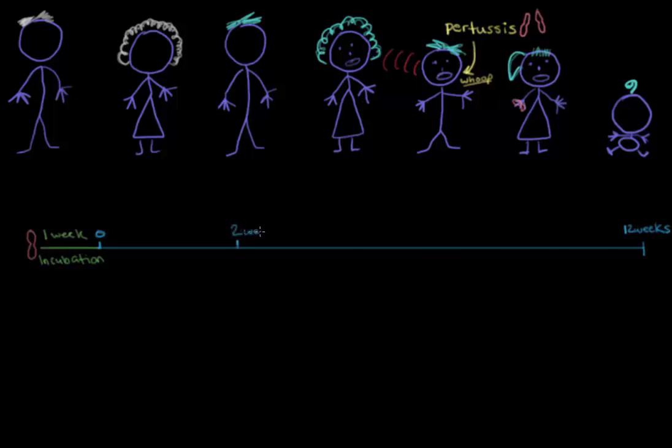The first stage is from the onset of the clinical symptoms to about two weeks. It has this fancy name called the catarrhal stage, and the word catarrhal literally means inflammation of the respiratory tract with increased secretions. So this stage is appropriately named because the main clinical symptoms that you see here are a runny nose with sneezing, a small cough, and a low-grade fever.